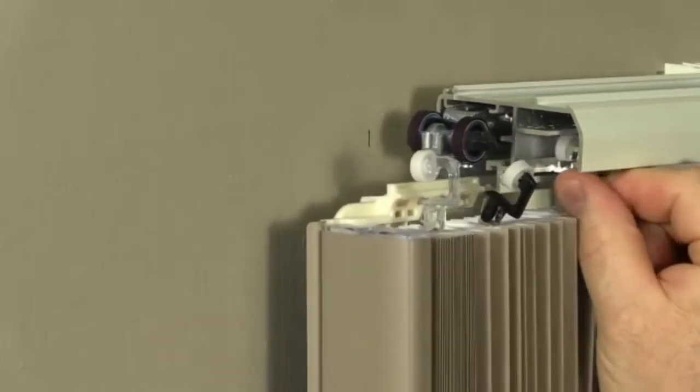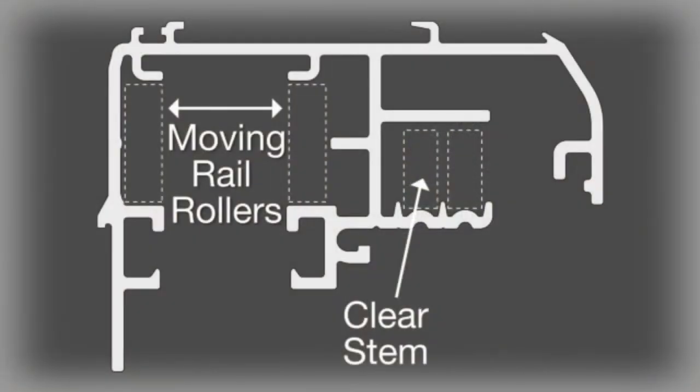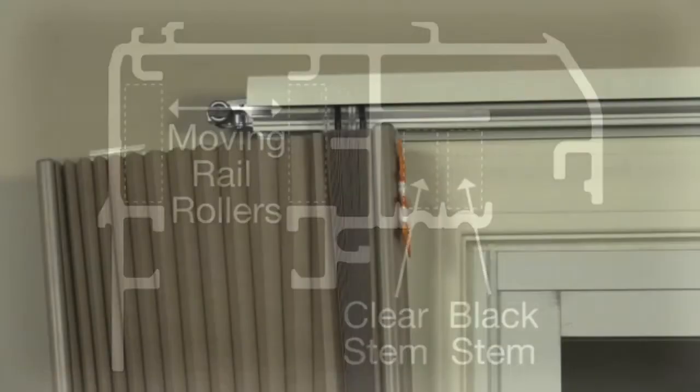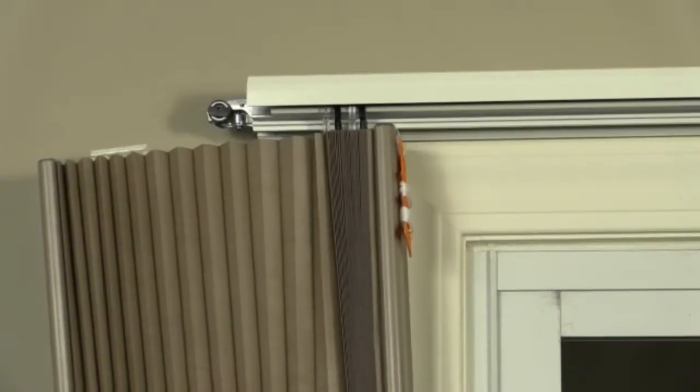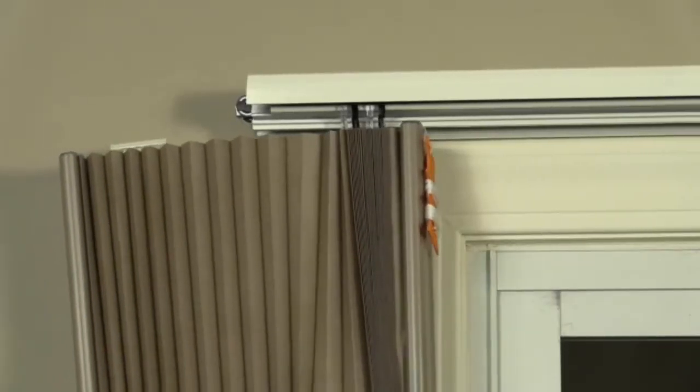The wheels with the clear stems go into the rear channel and the wheels with the black stems go into the front channel. Once all the wheels slide into the moving bracket and the fabric carriers are far enough into the head rail,